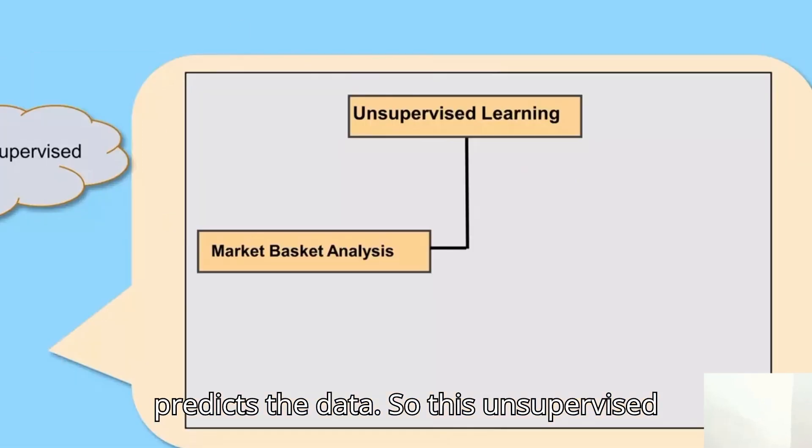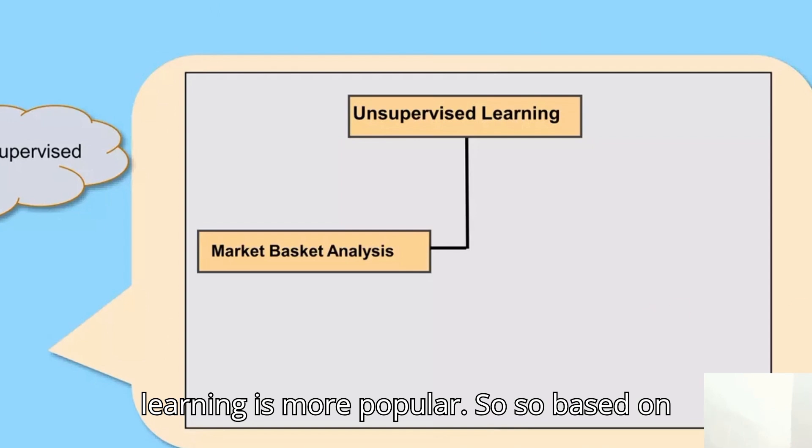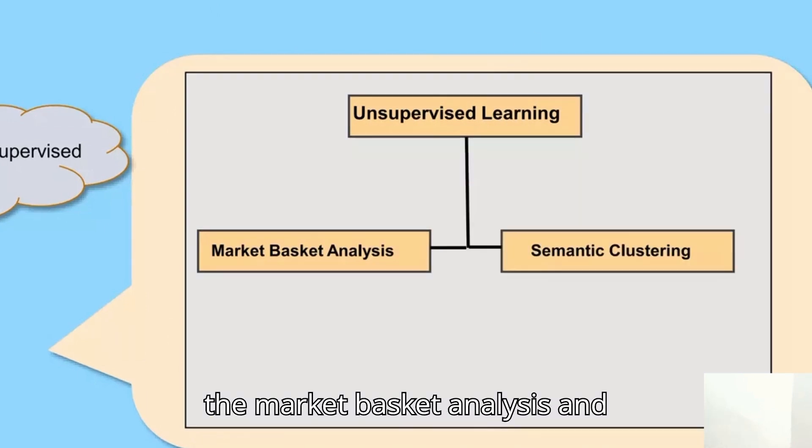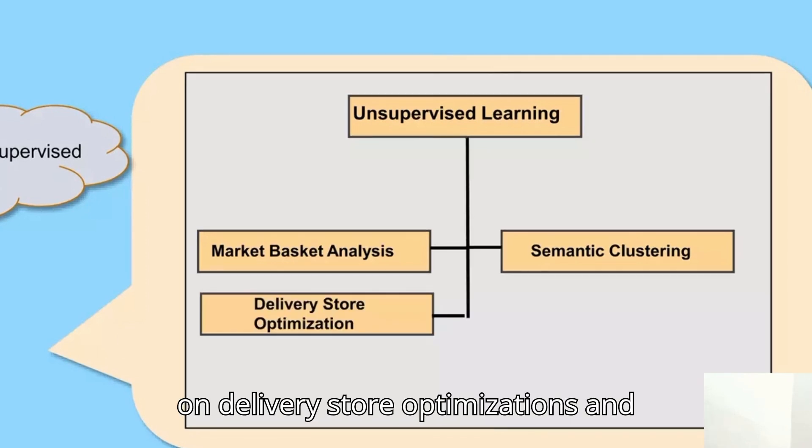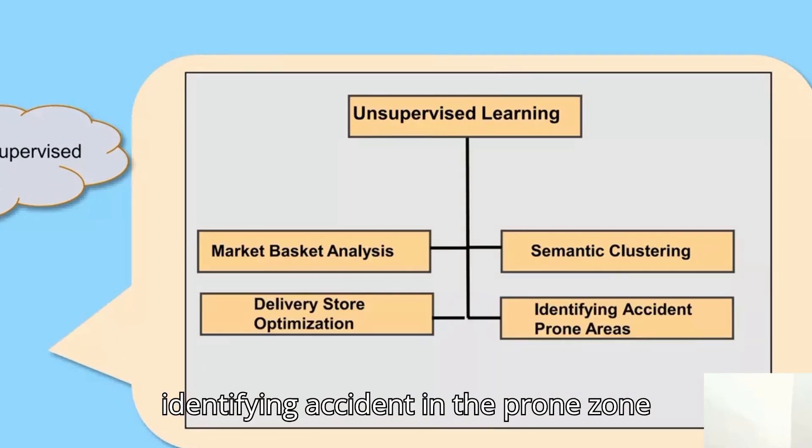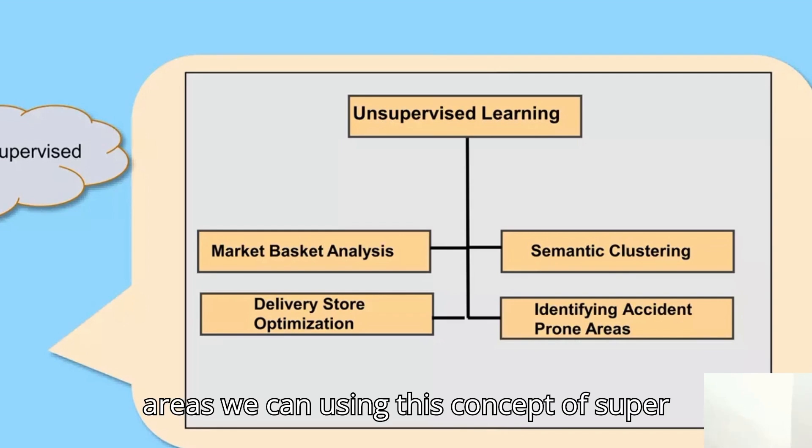Based on customer one and customer two, it predicts the data. This unsupervised learning is more popular based on market basket analysis and semantic clustering methods. For delivery store optimizations and identifying accident-prone zone areas, we can use this concept.